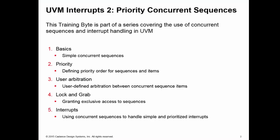This is the second in a series of training bytes showing you how to use UVM concurrent sequences to create interrupt handling routines. In the first training byte, we looked at simple concurrent sequences. In this training byte, we'll look at prioritized sequences and sequence items and the arbitration schemes of the sequencer that use priority.